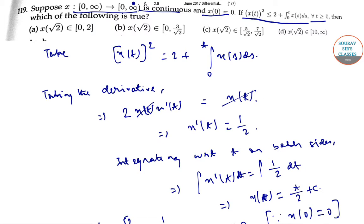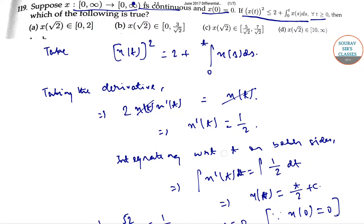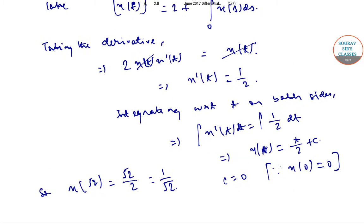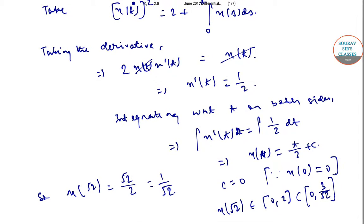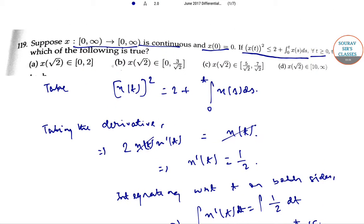And for the other two options we get x(√2) belongs to the subset of 0 comma 3 by √2, therefore option B is the correct answer.